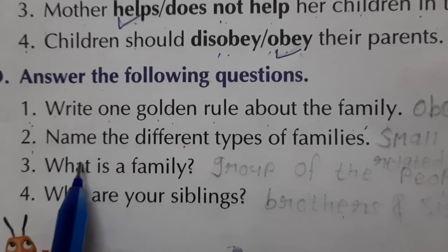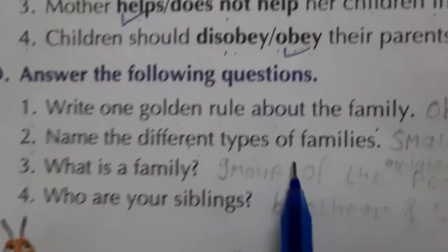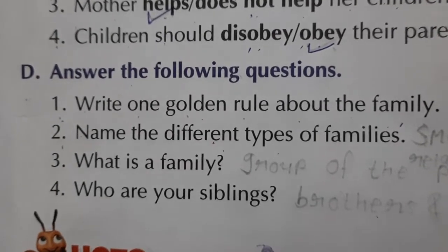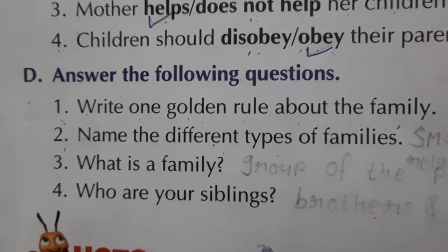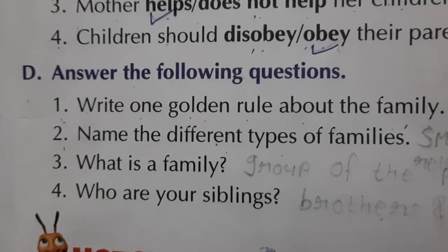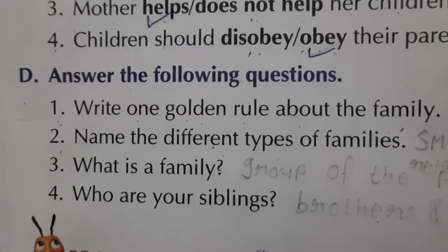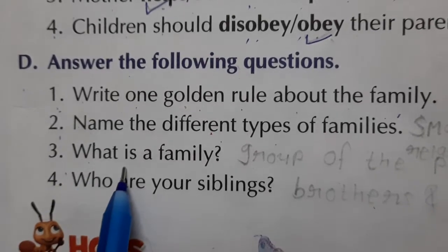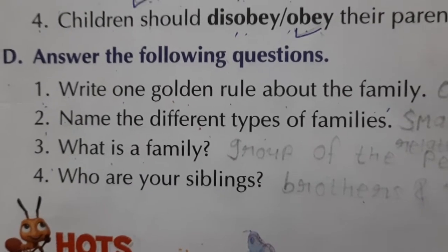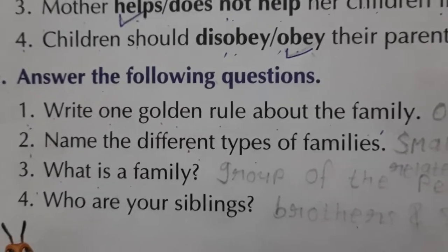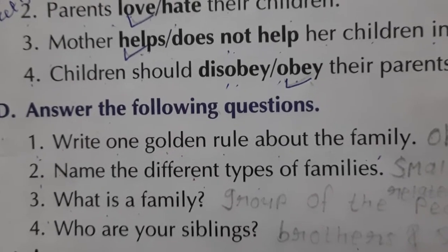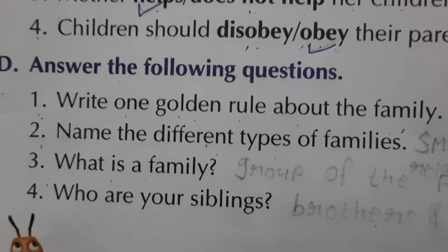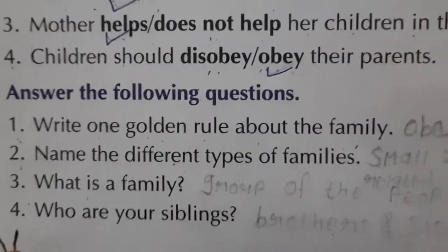Question number 2: Name the different types of families — matlab alag alag tarah ki family ke naam batao. There are two types of family: one is small family and the second one is big family. Question number 3: What is a family? A group of people which is related to each other and lives together is called a family.